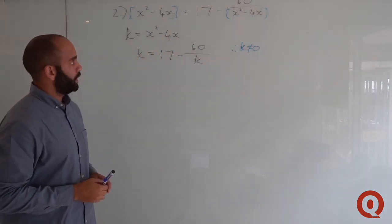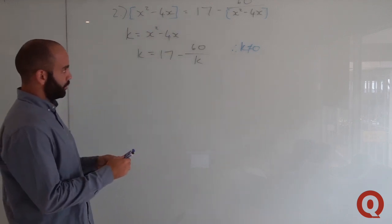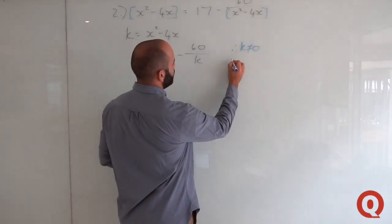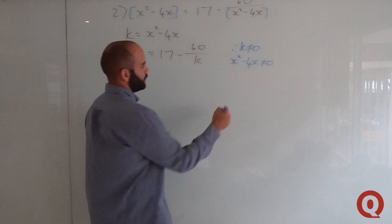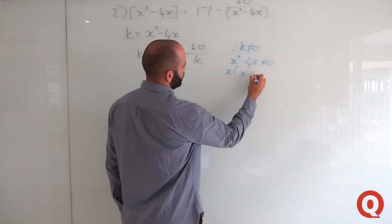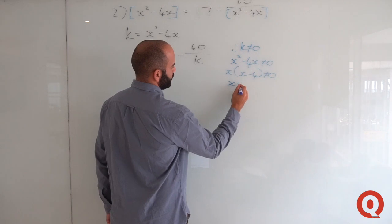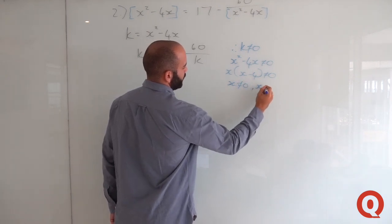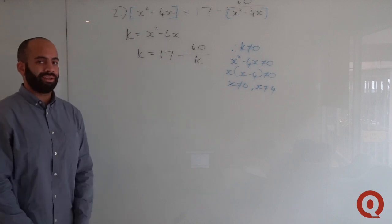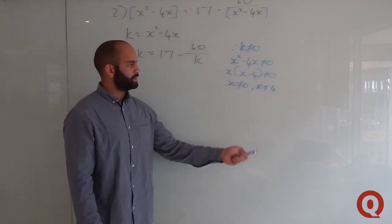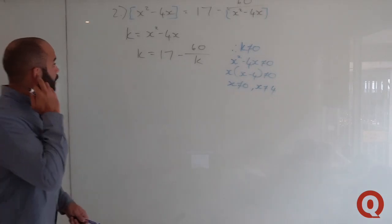Since k is in the denominator, we must state that k ≠ 0 to avoid division by zero. This also means x²−4x ≠ 0. Factoring out x gives x(x−4) ≠ 0, so x ≠ 0 and x ≠ 4. If we get either of those values in our final answers, we'll know something went wrong.